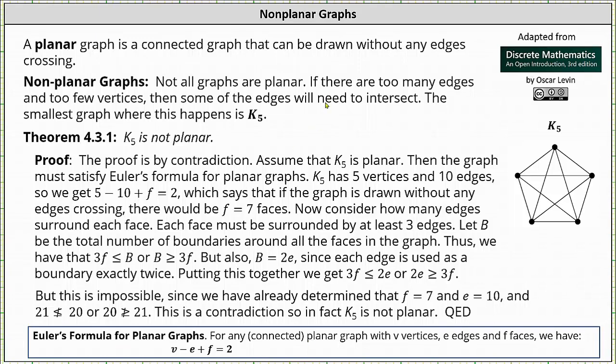However, not all graphs are planar. If there are too many edges and too few vertices, then some of the edges will need to intersect. The smallest graph where this happens is the complete graph K5.